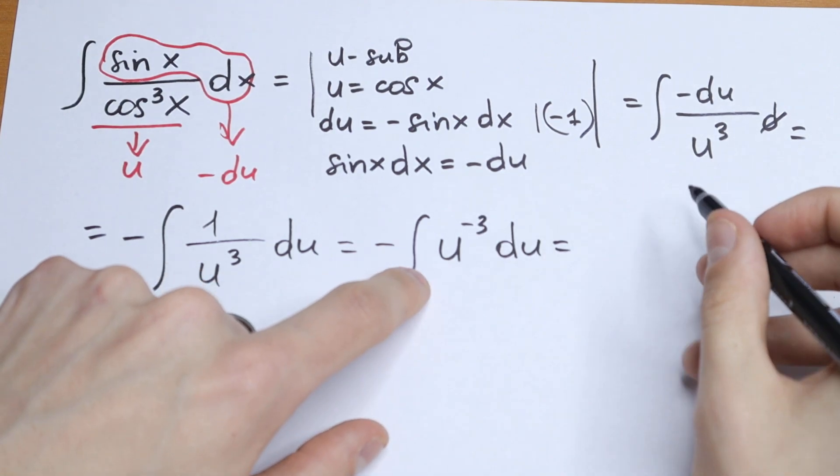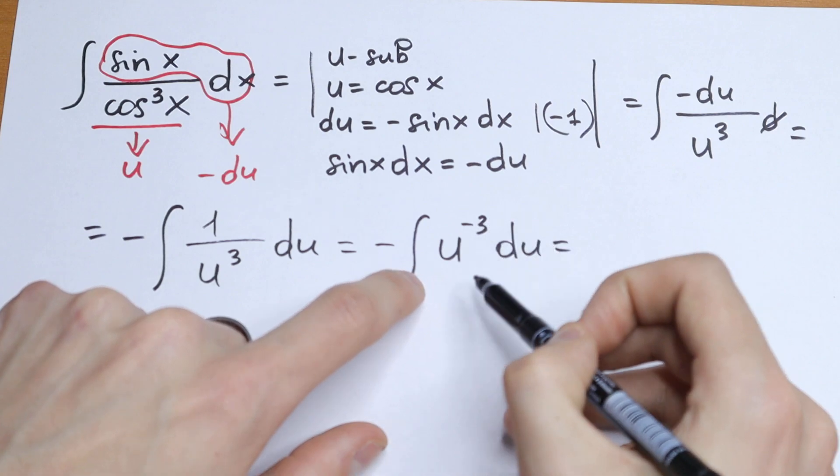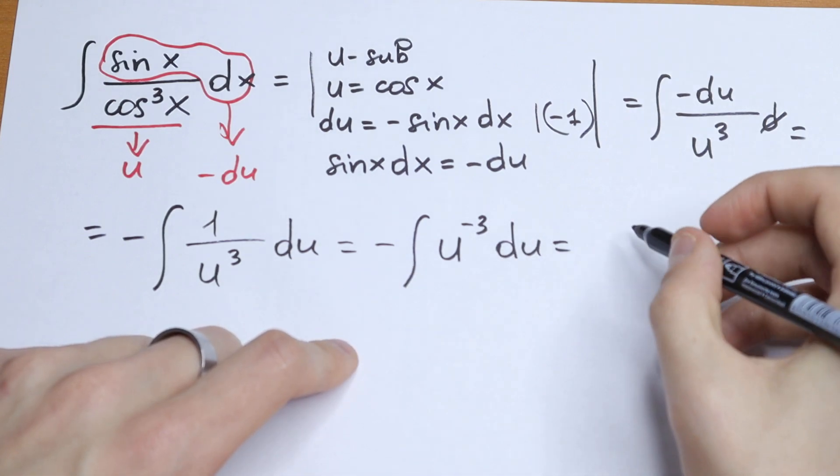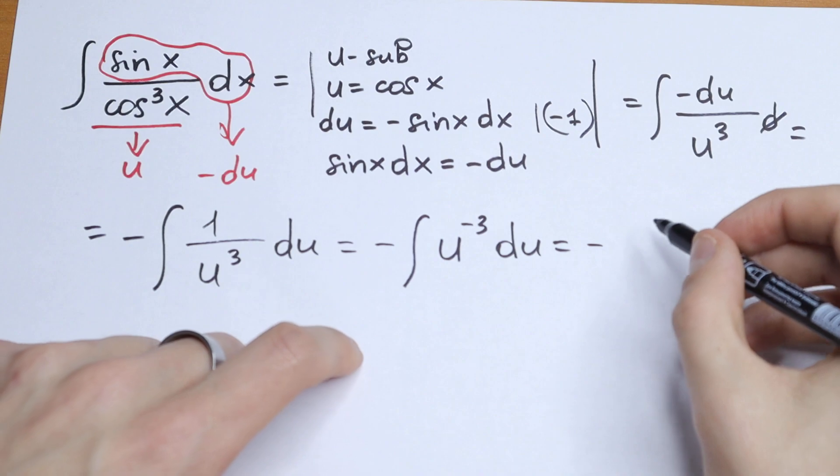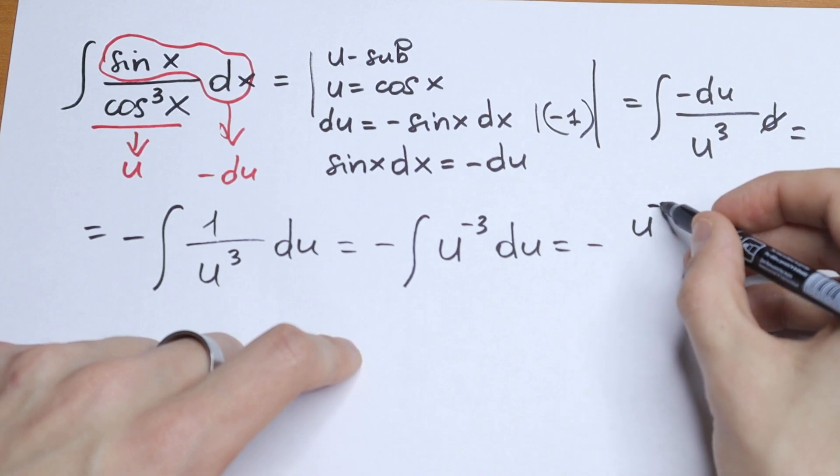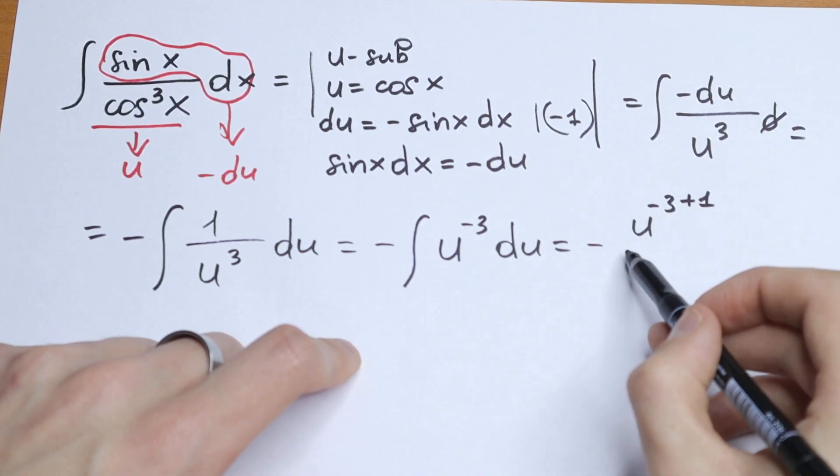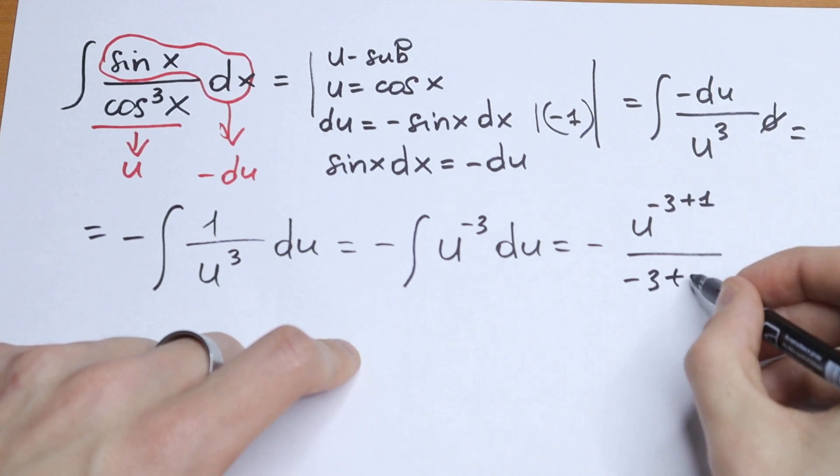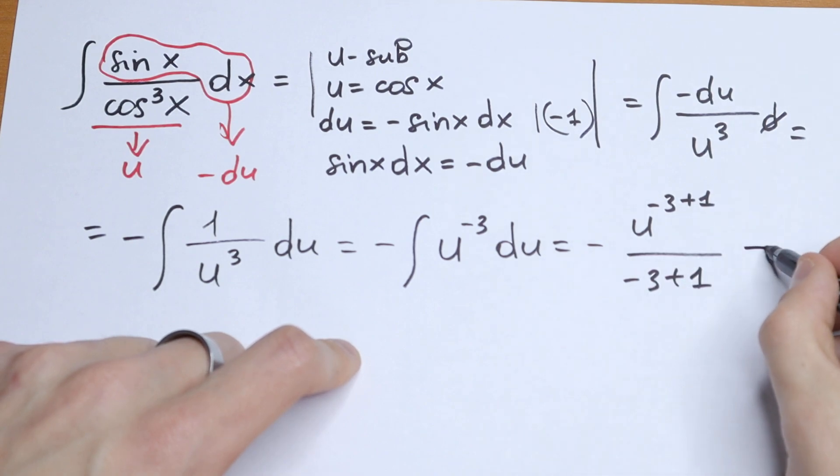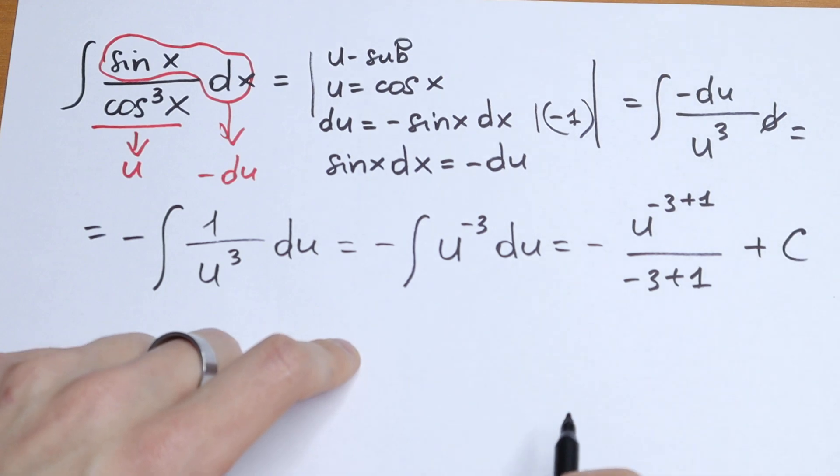And this is a classic case. We need to add one and to divide by this one. So we will have minus and we write u to the power minus 3 plus 1. And we need to divide by this power minus 3 plus 1 plus constant plus c.